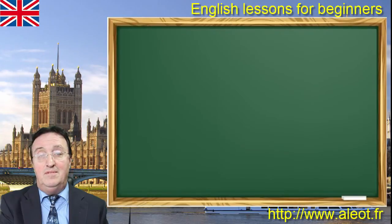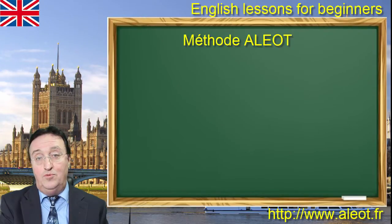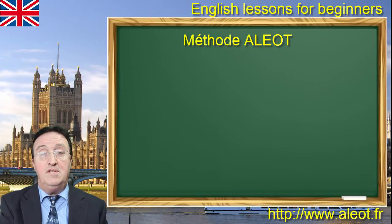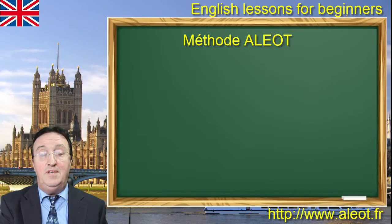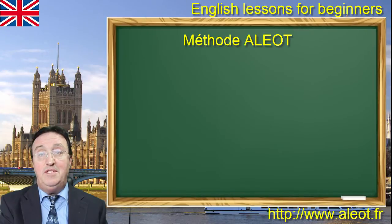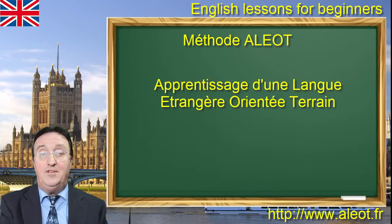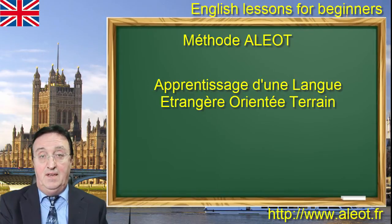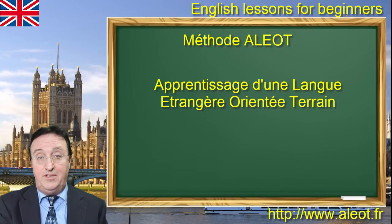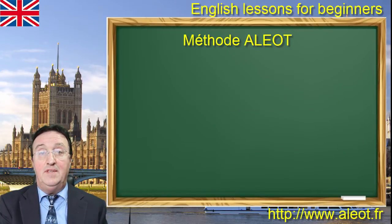Très rapidement, la méthode Aleo est un nom à double sens : partir de zéro, c'est-à-dire de zéro connaissance en anglais, pour aller petit à petit plus haut. Aleo est un acronyme qui veut dire « apprentissage d'une langue étrangère orientée terrain ». En quoi consiste cette orientation et cette méthode ?